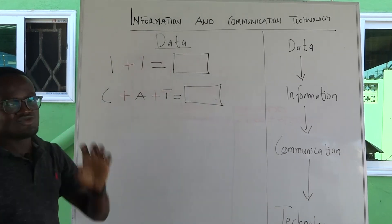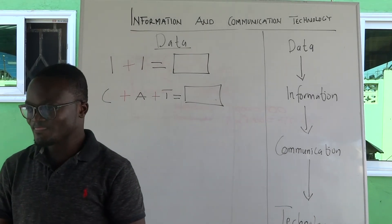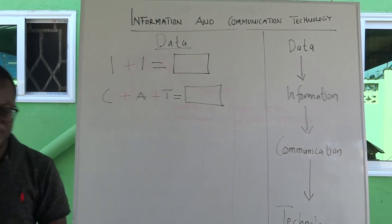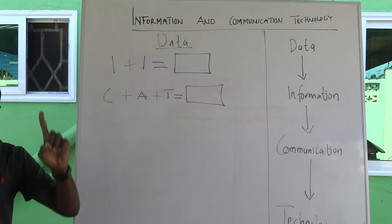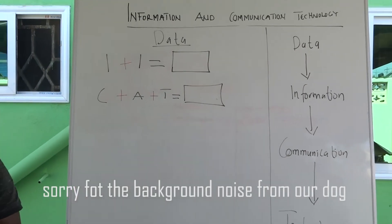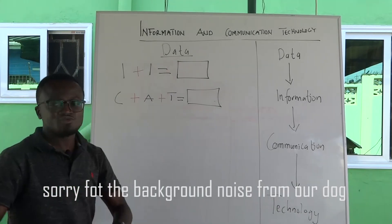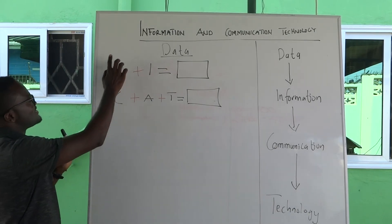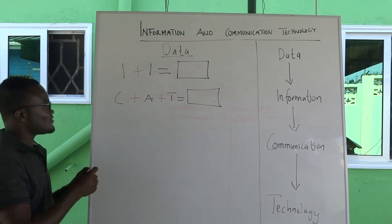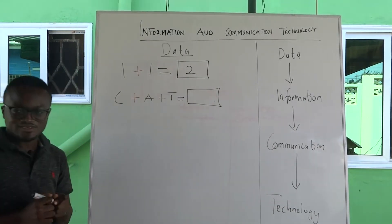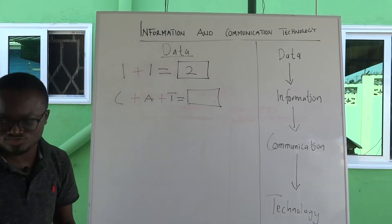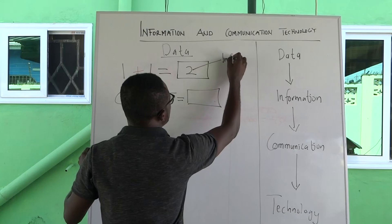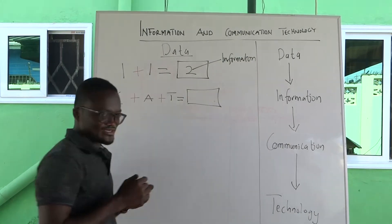Before you can understand information, you need to understand what data is. On this whiteboard you have one plus one equals an empty box. The one here represents what you call data, and the other one is also called data. The box is what we are looking for — that is the information. When you add one plus one, the answer is two. When someone writes one plus one, it doesn't really make sense unless you get the answer, which is two. That answer, two, represents what you call information.